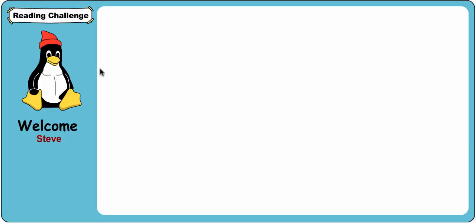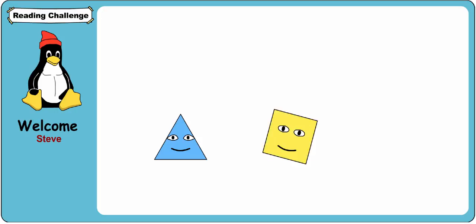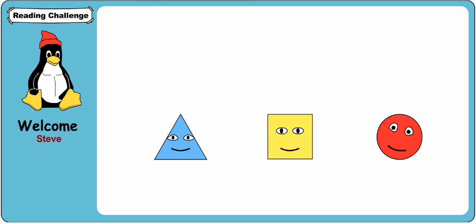Blend the sounds: M, A, P together. What word do they make? Map. Pan. Mud. This section is phoneme manipulation and it is blending. A student could roll the mouse over to re-hear the options — map, pan, mud.